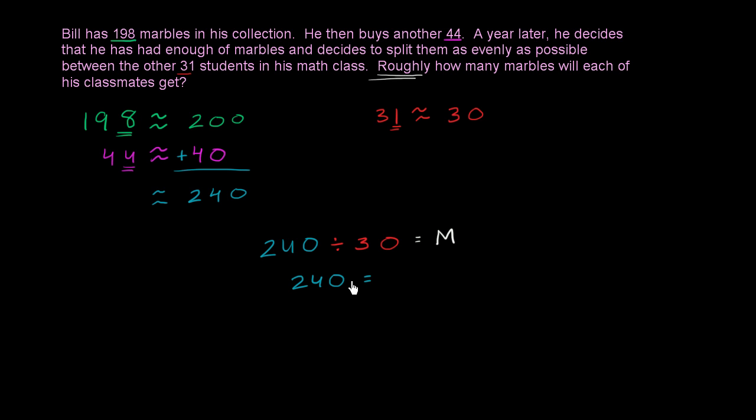Let me write it that way. So that's the same thing as saying that 240 is equal to m times 30, where m is what we're trying to figure out, the rough number of marbles per student. So let's think about what m is. We could just look at our multiples of 30.